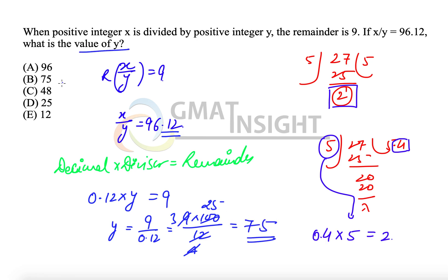And now we know that the value of y is 75, which is option B. I hope you enjoyed the explanation, and this is a principle that needs to be learnt forever. Because this can be used in any other question which requires us to relate the decimal part with the remainder.